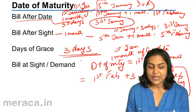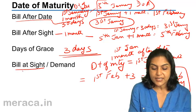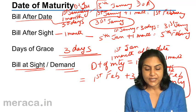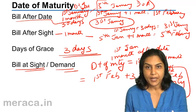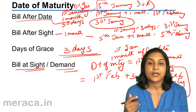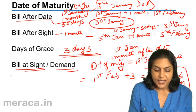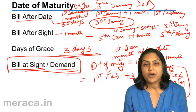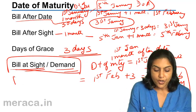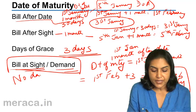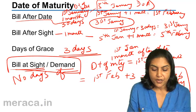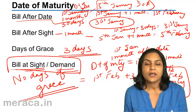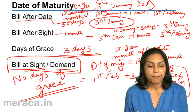However, sometimes a bill may be a bill at sight or a demand bill. A bill at sight or a demand bill is a bill which has to be paid the moment it is presented. For such bills, there are no days of grace. They have to be paid the moment they are presented for payment.